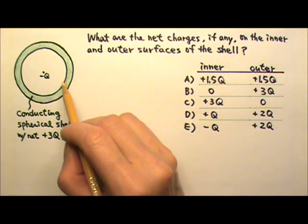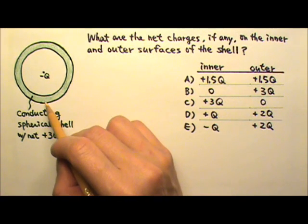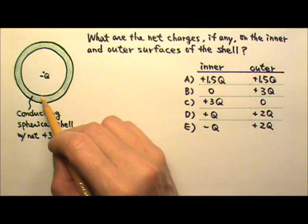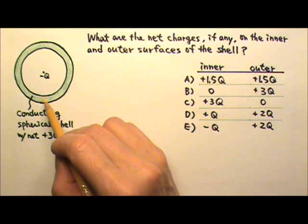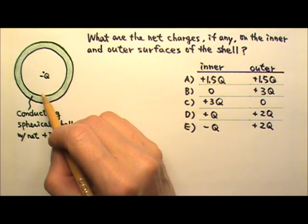Because no electric field lines can exist inside this conducting shell. Because electric field has to be zero inside a conductor in a static situation. This means those 4 lines I'm going to draw must originate from the inner surface of the shell.